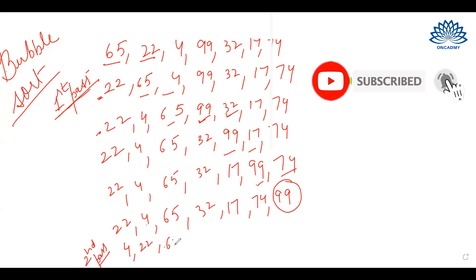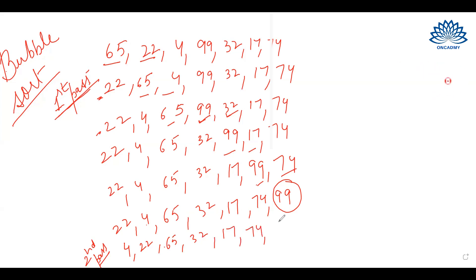The rest of the elements remain as they are. Now we'll compare 22 with 65. Since 65 is already bigger than 22, it will stay in its place. In the next iteration, we'll compare 65 with 32. Since 32 is smaller than 65, we will swap them. Now we have: 4, 22, 32, 65...